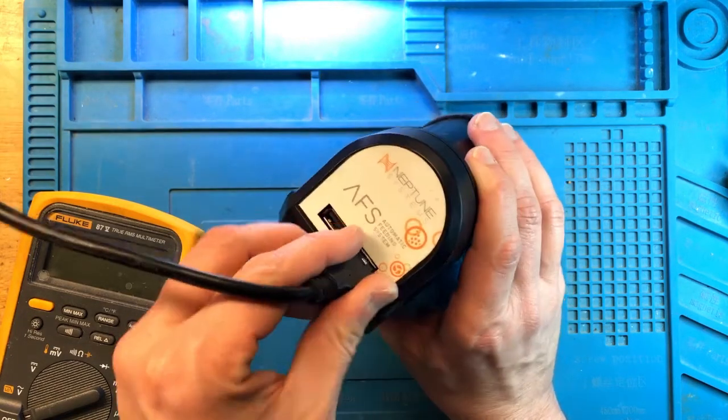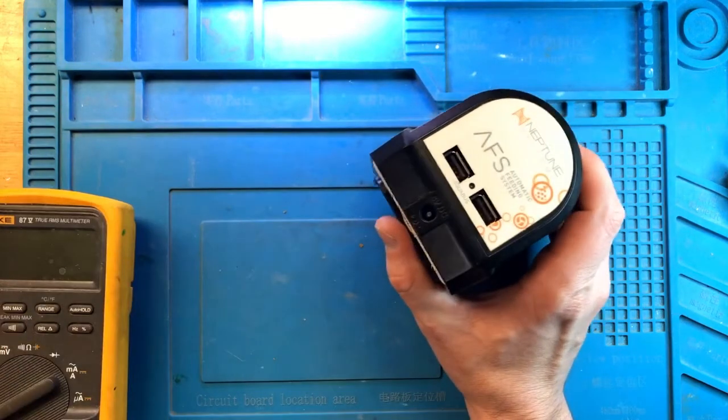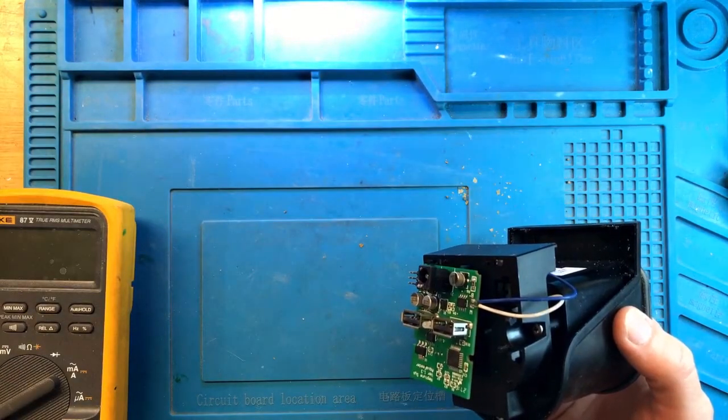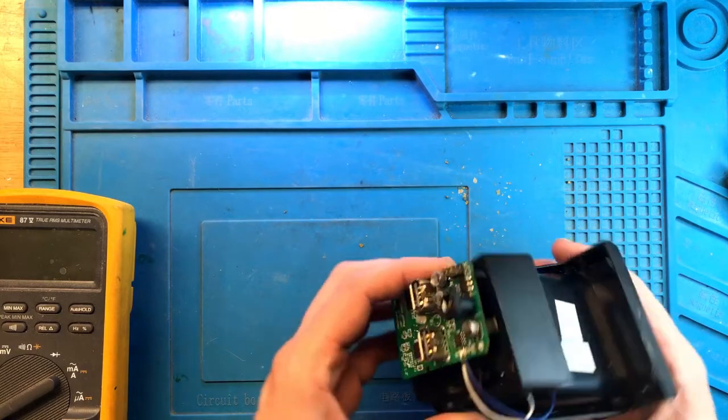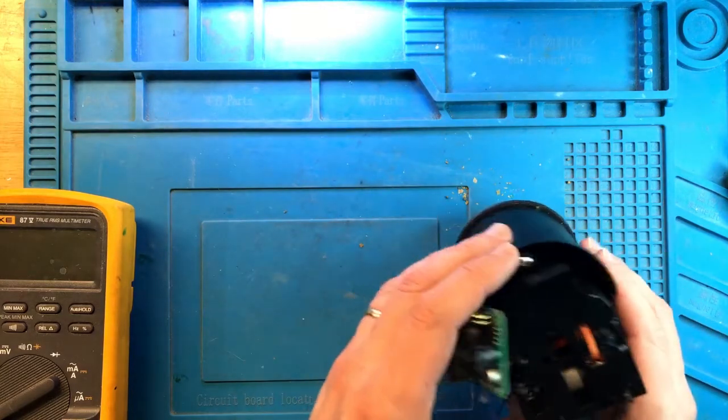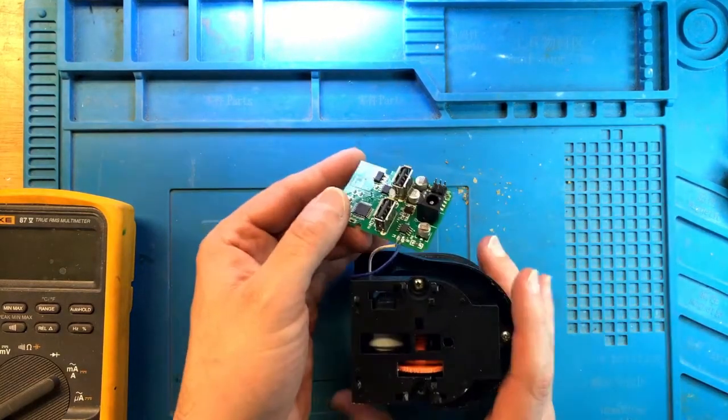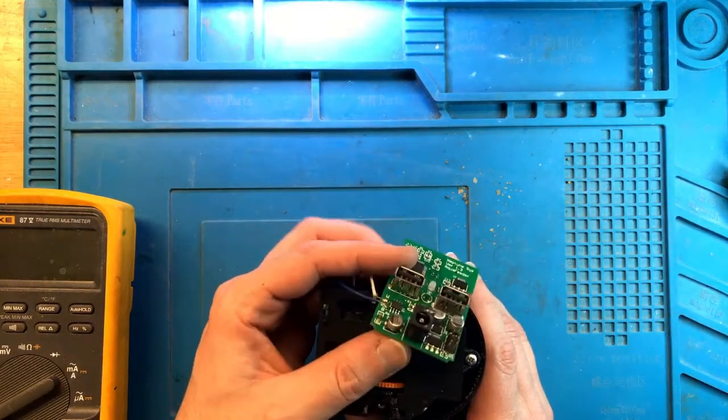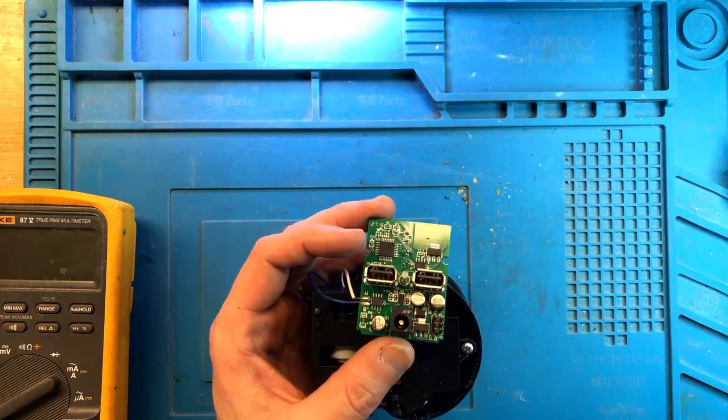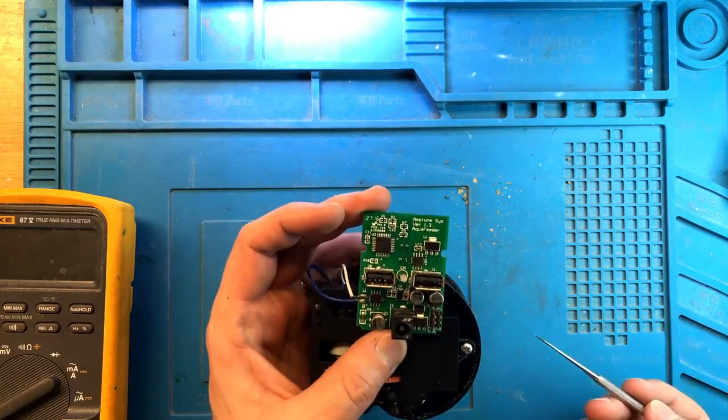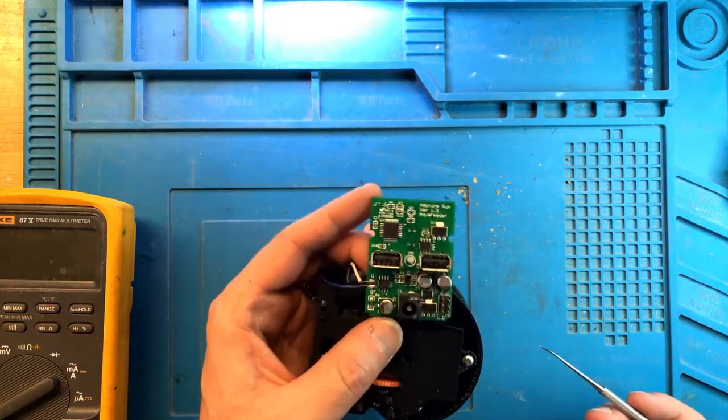All right. Well, it comes apart fairly easily. It's very, very tiny motherboard, or main board. So we have the two Aquabus ports, the power. What else is here? What else is of use?